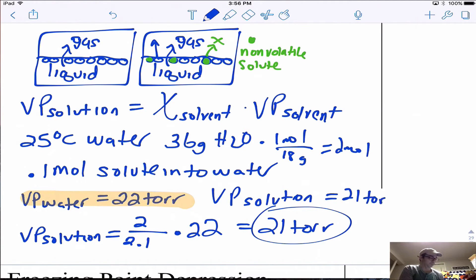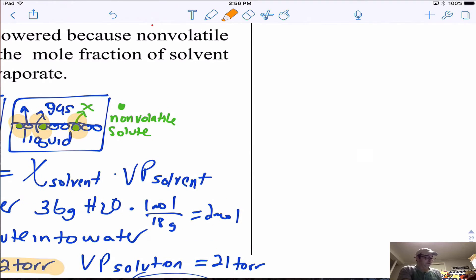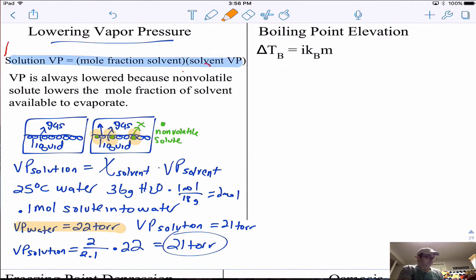We see the water is able to evaporate less. Less water actually will evaporate; that will lower the vapor pressure. Now let's look at boiling point elevation.